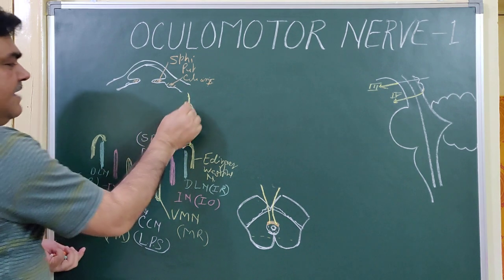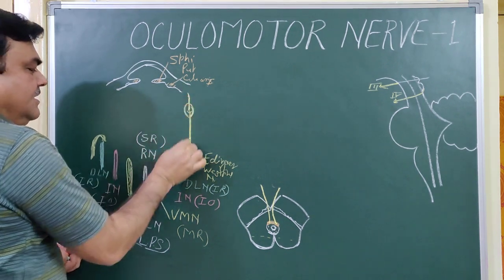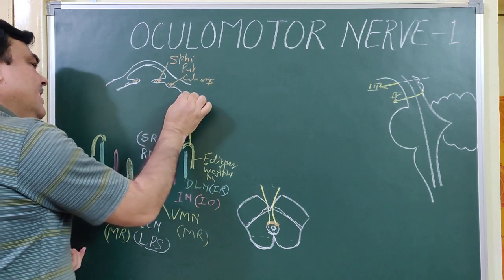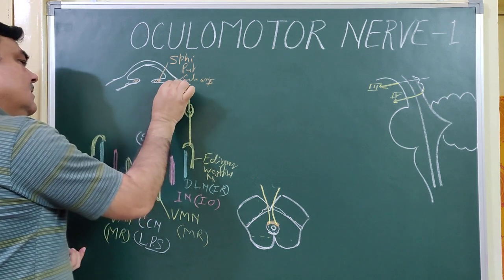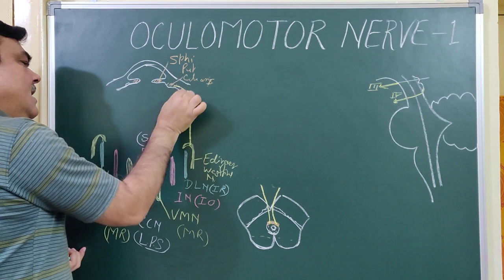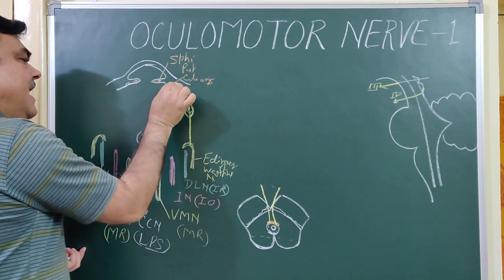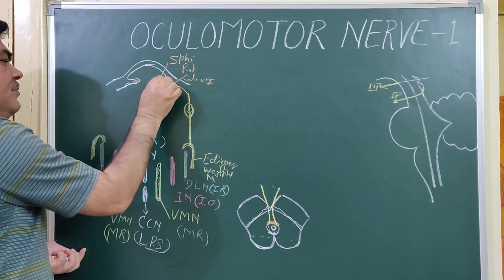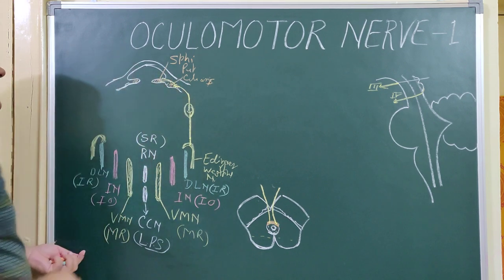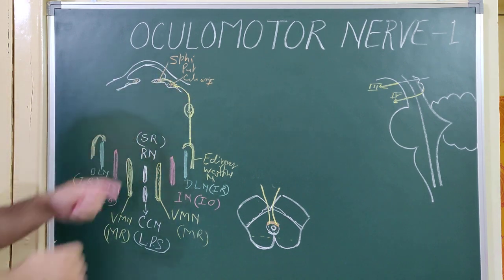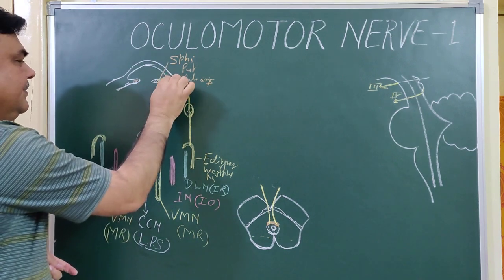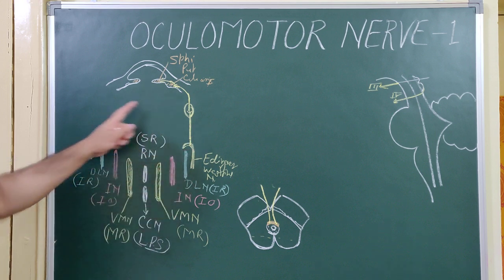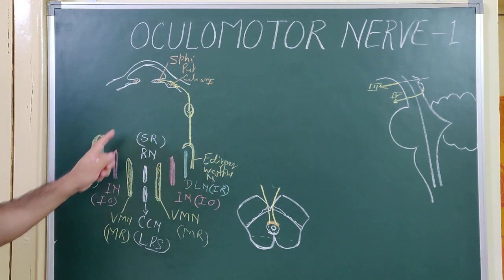These post-ganglionic fibers pierce the sclera and pass between the choroid layer and sclera, giving supply to the ciliaris muscle and sphincter pupillae muscle. This is the parasympathetic supply. This is the oculomotor nuclear complex.